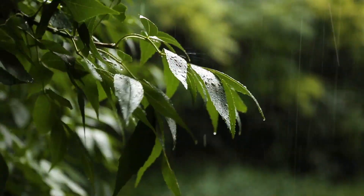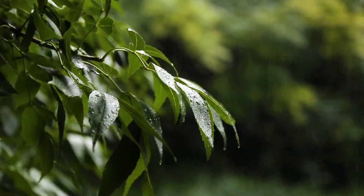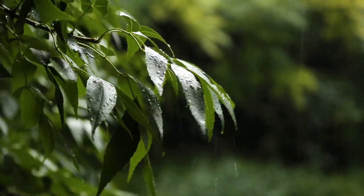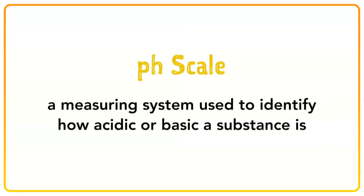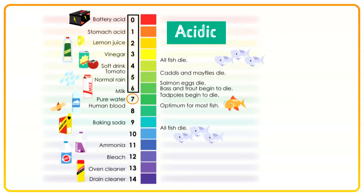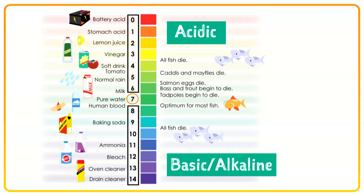These chemicals lower the acidity of rain. The pH scale is a measuring system used to identify how acidic or basic a substance is. Pure water is considered neutral and is a 7 on the pH scale. Anything below 7 is considered acidic and anything above 7 is considered basic, sometimes referred to as alkaline.